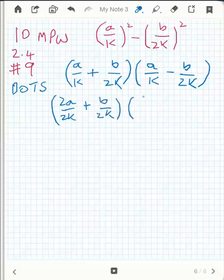And this one is 2a on 2k, and this one is 2a on 2k minus b on 2k. They're both over 2k.